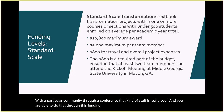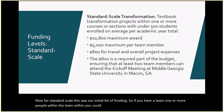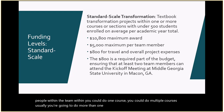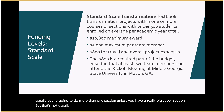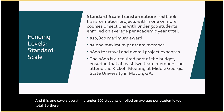For standard scale, you can have one or more people on your team. You could do one course or multiple courses, usually more than one section. This covers everything under 500 students enrolled on average per academic year total. Most of the applications we get are standard-scale textbook transformation grants.